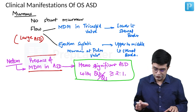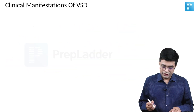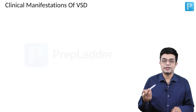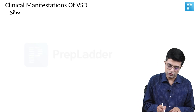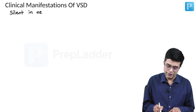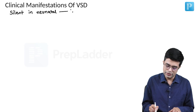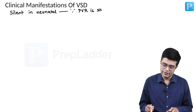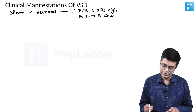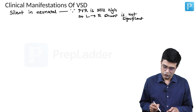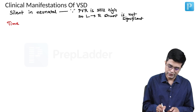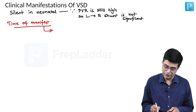These are the features of ostium secundum ASD that you need to remember. Most VSDs are silent in the first 4 to 6 weeks — VSD will be silent in the neonatal period because the pulmonary vascular resistance is still high, so the left-to-right shunt is not significant enough to produce features. Most significant VSDs present between 6 to 8 weeks of age; some books give a range of 6 to 10 weeks.